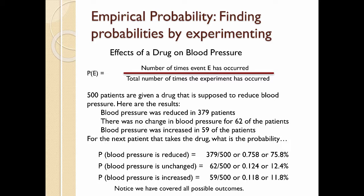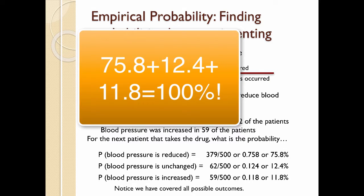Now, that's all the possible outcomes that were measured in this experiment. We've covered them all. And if you were to take those percentages, 75.8, 12.4, 11.8, and add them up, you would actually get 100 percent, because we have covered every single case that could happen in this very simple experiment.